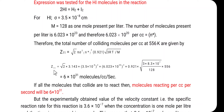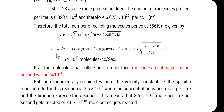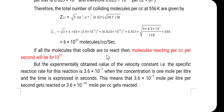Substituting the values: Z11 = √2 × 3.143 × (3.5 × 10⁻⁸)² × (6.023 × 10²⁰)² × 0.921 × √(3 × 8.3 × 10⁷ × 556 / 128). When solved, the value of Z11 = 6 × 10³¹ molecules per cc per second. If all the molecules that collide were to react, then the molecules reacting per cc per second would be 6 × 10³¹.